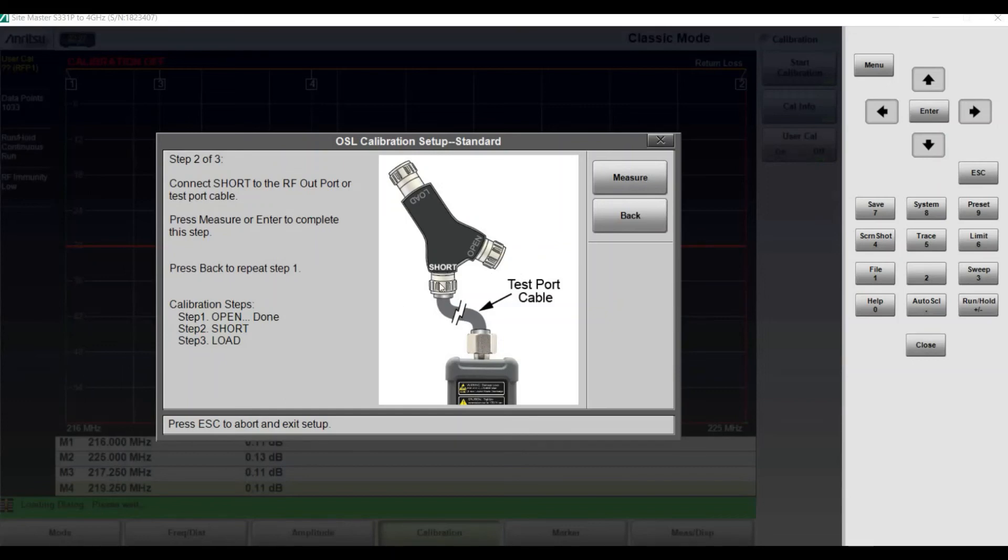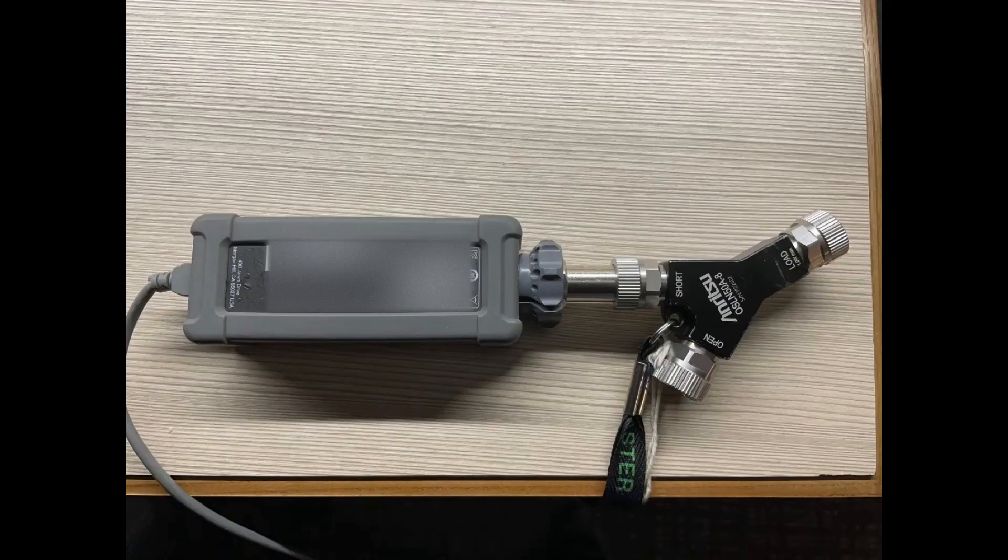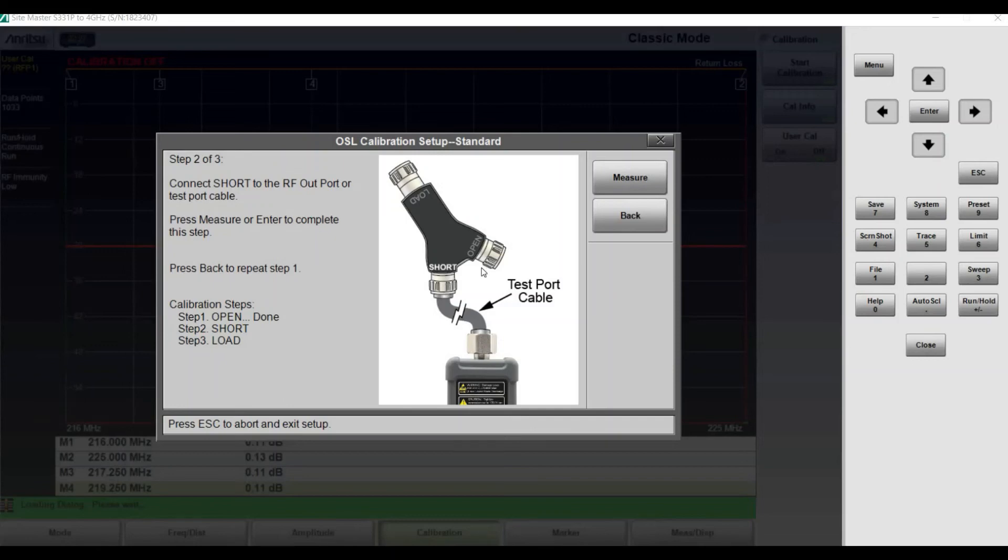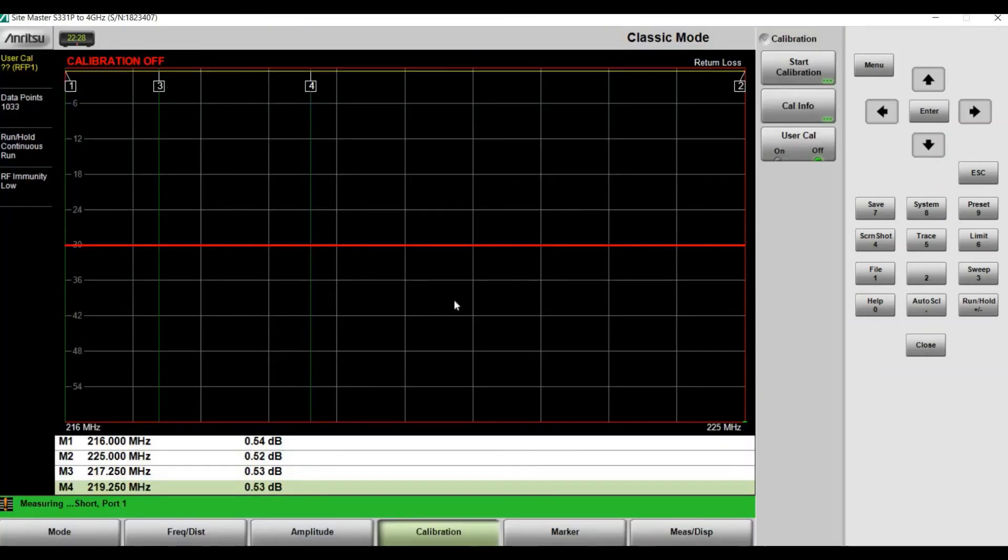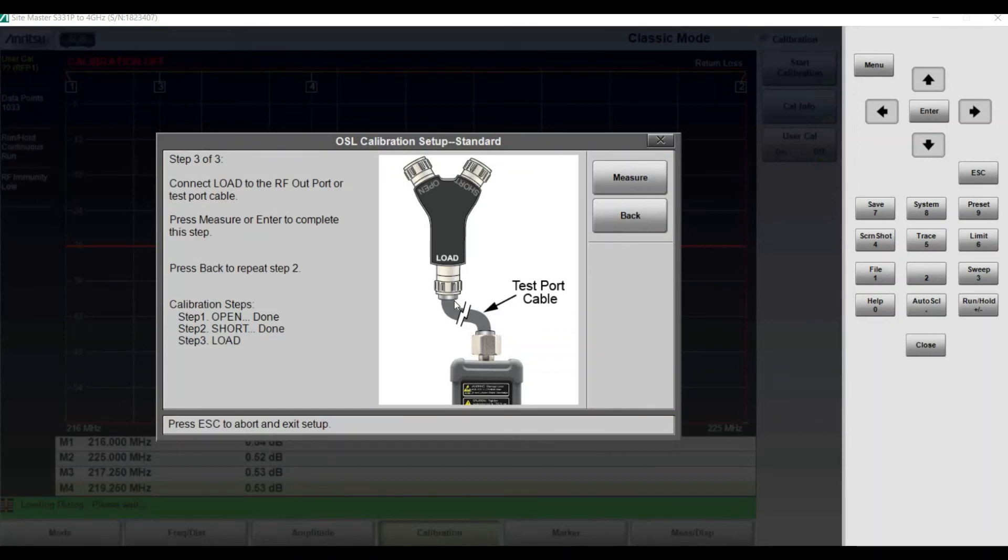Then you move on to the next port, which is SHORT. Once it's tightened and you're ready, click measure. Displays another beep.